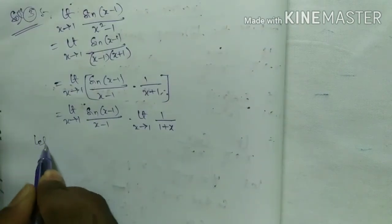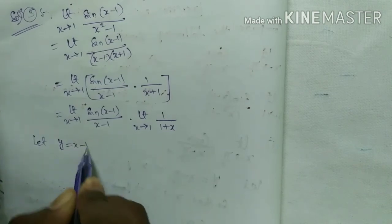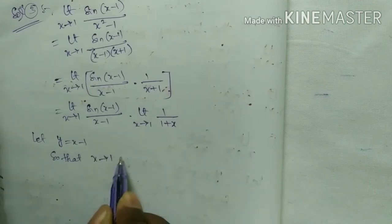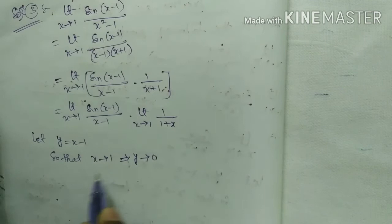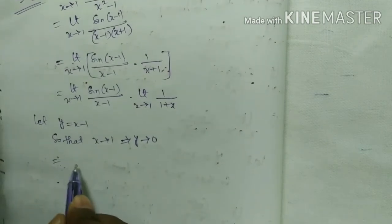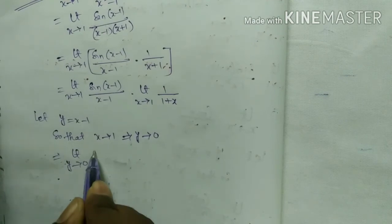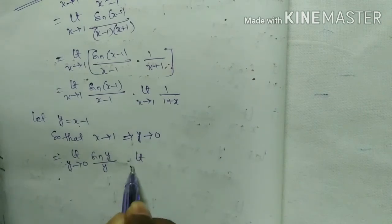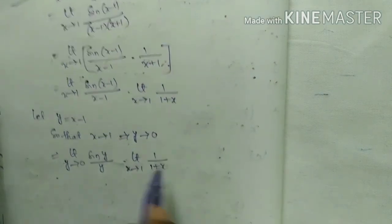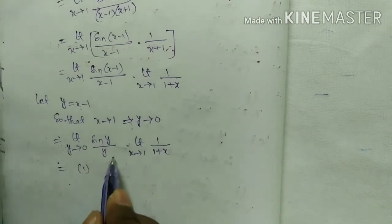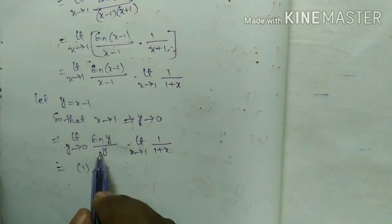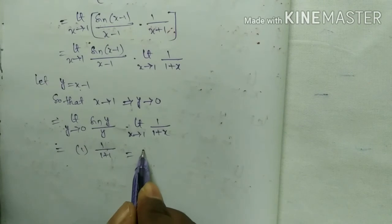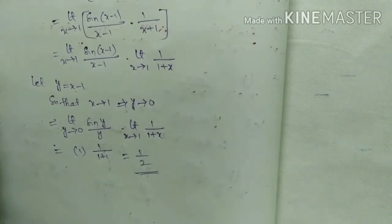For the left term, let y = x − 1, so that when x tends to 1, y tends to 0. This gives limit y tends to 0 of sin y / y, which equals 1 by the standard limit. Multiplied by limit x tends to 1 of 1 / (1 + x) = 1 / (1 + 1) = 1/2. The answer is 1/2.